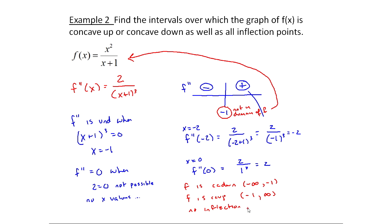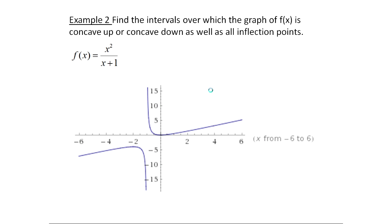You may wonder: how can you change from concave down to concave up without an inflection point? Looking at the graph, x equals minus 1 is actually a vertical asymptote — about right here. The graph is concave down to the left of that line and concave up to the right, but an inflection point must be on the graph itself — it's where we switch on the curve. Since minus 1 is an asymptote and not on the graph, that's why the graph changes concavity without having an inflection point.